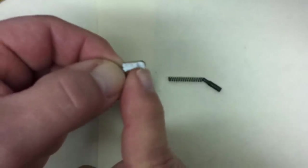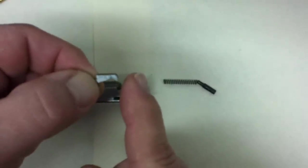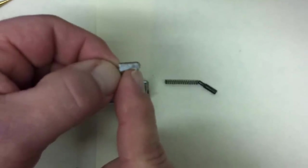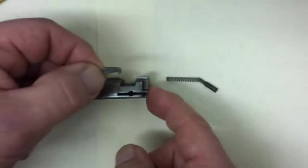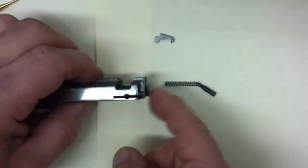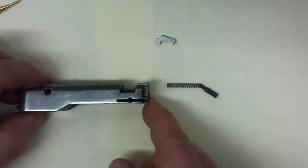Because the real function of the extractor is twofold: either to pull out an unfired case from the chamber, or to hold the case against the bolt face while the bolt comes back. And that allows the case to properly hit the ejector, either the ejector that's built into the magazine or the one that's built into the trigger group.